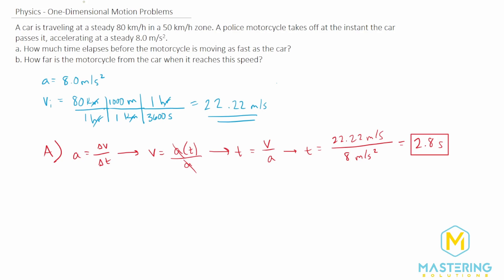Now let's move on to part B. We want to figure out in that amount of time, how far is the motorcycle from the car when it reaches that speed. We need to figure out how far the car went, then how far the motorcycle went, and the difference will be how far apart they are.